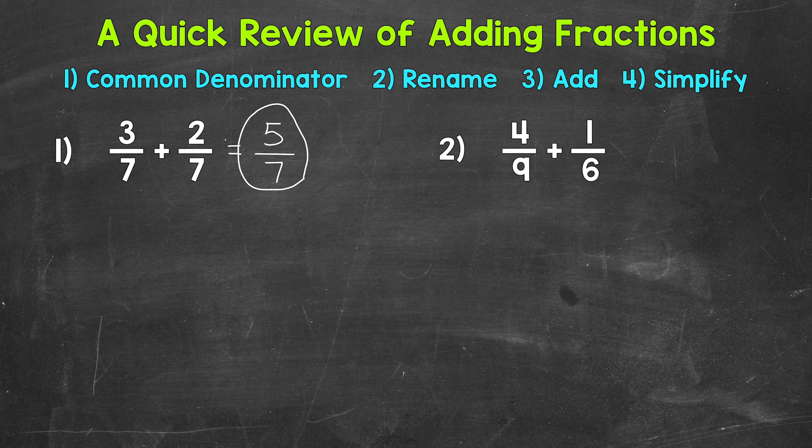So for this one, we do not have a common denominator in our original problem. So we need to find a common denominator and then rename both of our fractions with that common denominator before we can add. Now we're going to find a common denominator between 9 and 6 by finding the least common multiple between 9 and 6. And that's going to be our least common denominator. You may be able to think about what that least common multiple is. But as a review, let's write out some multiples of both 9 and 6 in order to find that least common multiple. And again, that's going to be our least common denominator.